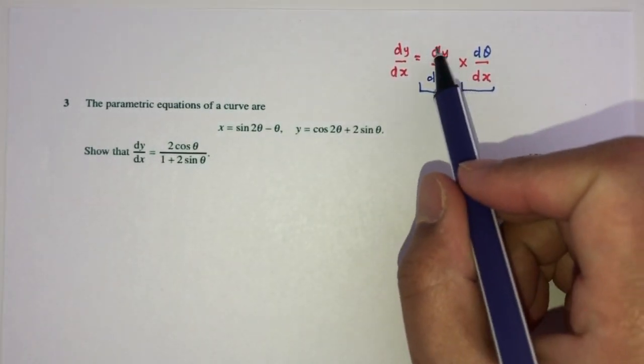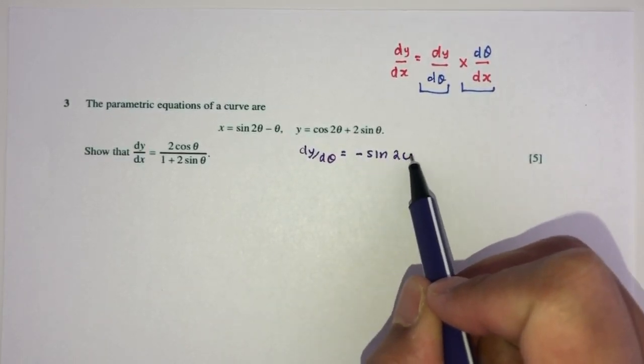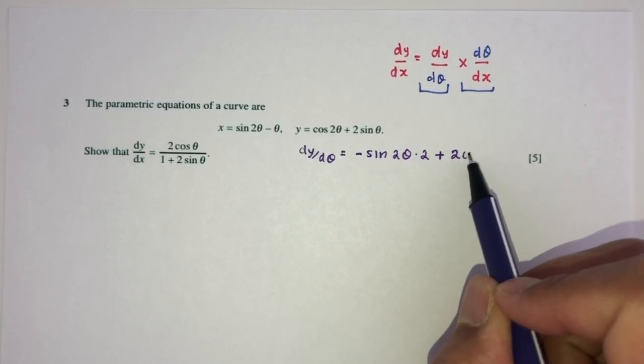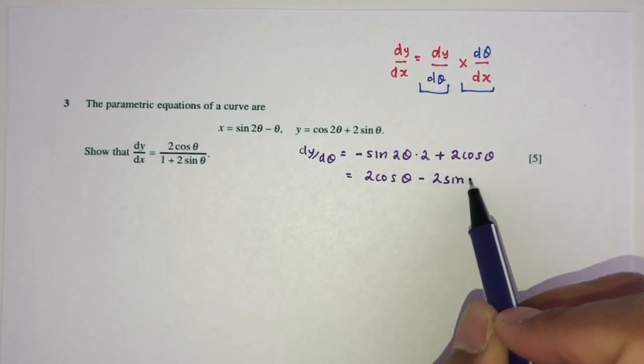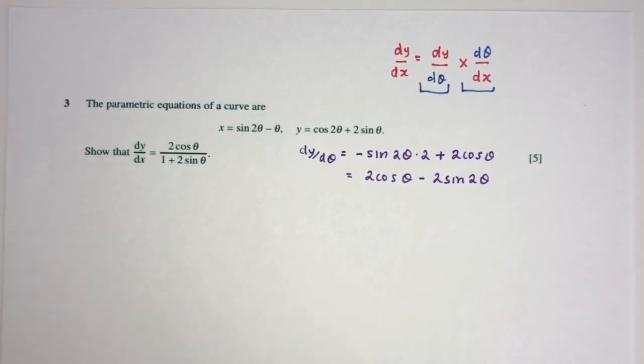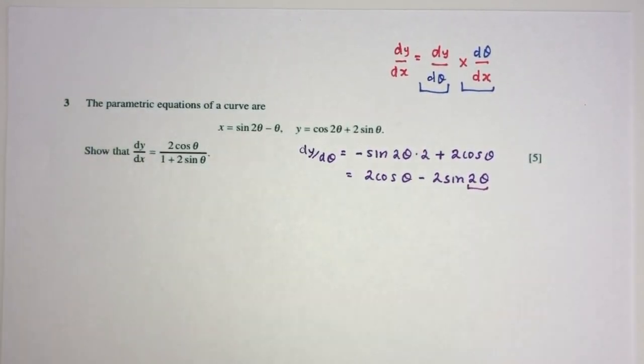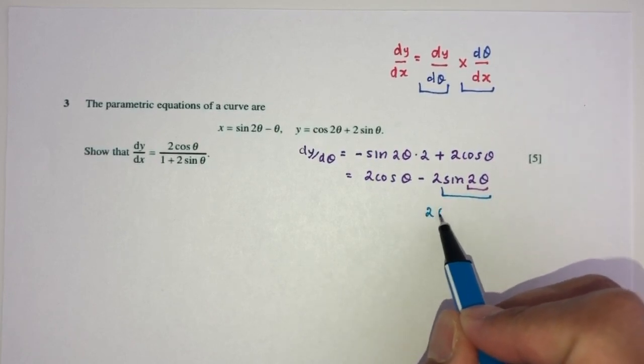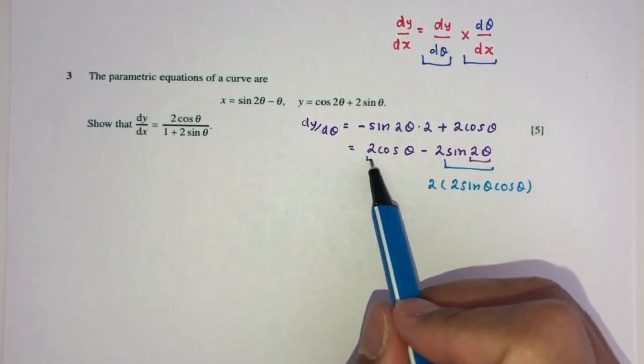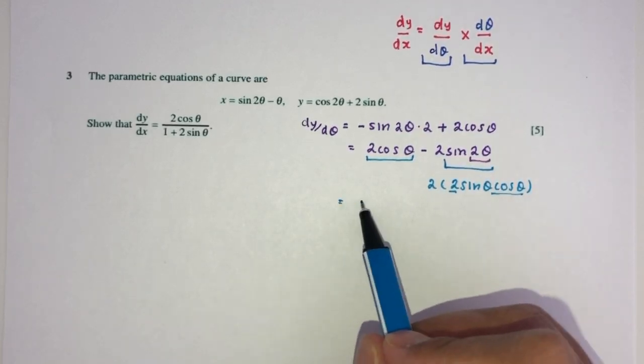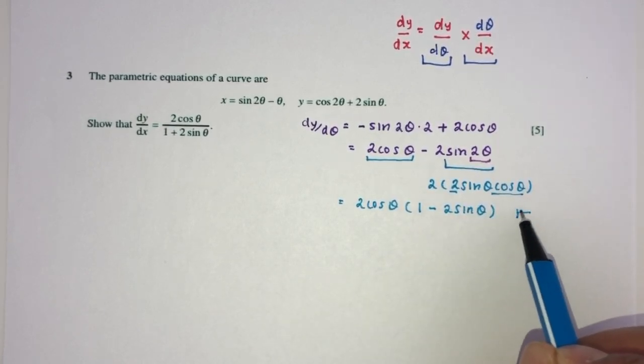One by one, we have y here. Let's find dy by d theta. Differentiate with respect to theta. That will be minus sine 2 theta times 2 plus 2 cos theta. Simplify, you will have 2 cos theta minus 2 sine 2 theta. You can see that in the end, the final answer, we only have theta and theta. Here we have 2 theta. We can break it down. You will have 2 times 2 sine theta and cos theta. We can factorize. This is common here and this is common. So we can take it out. You will have 2 cos theta is common. Then you have 1 minus 2 remaining sine theta. And this is dy by d theta.